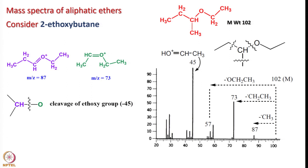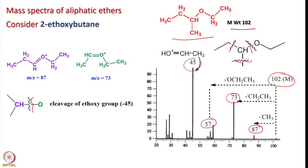Now let us move on to mass spectra of aliphatic ethers. Considering 2-ethoxybutane, molecular weight 102: possible cleavage sites give — losing one methyl radical gives 87, losing an ethyl radical gives 73, and losing an ethoxy radical gives 57. The fragmentation pattern shows 87 and 73 as important fragments: loss of ethyl gives 73 and loss of methyl radical gives 87.